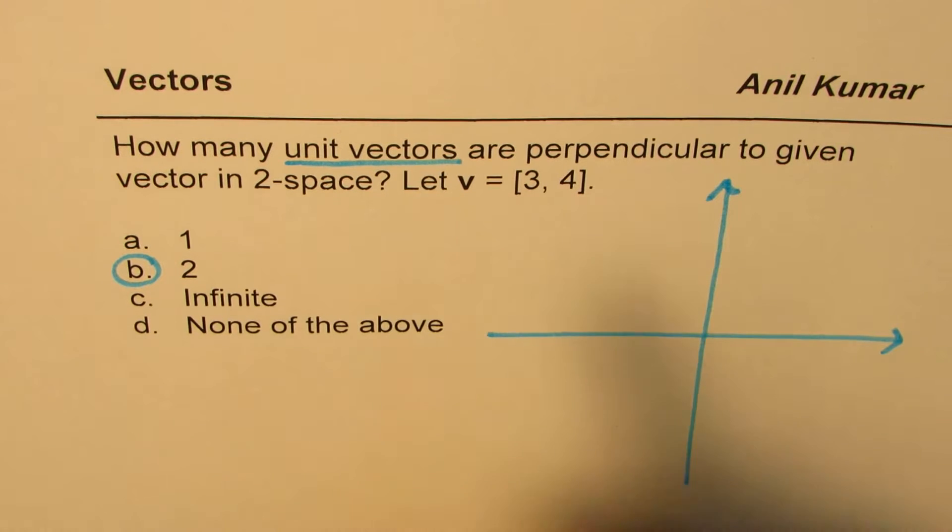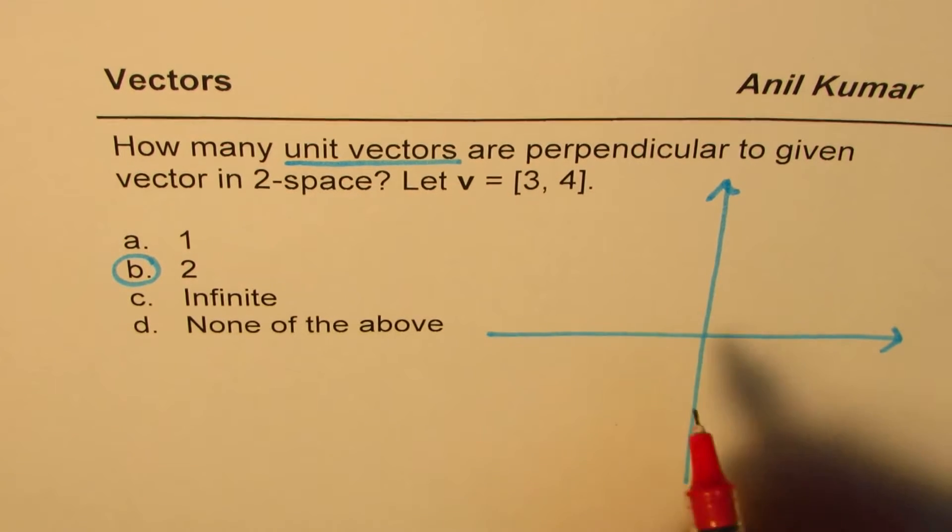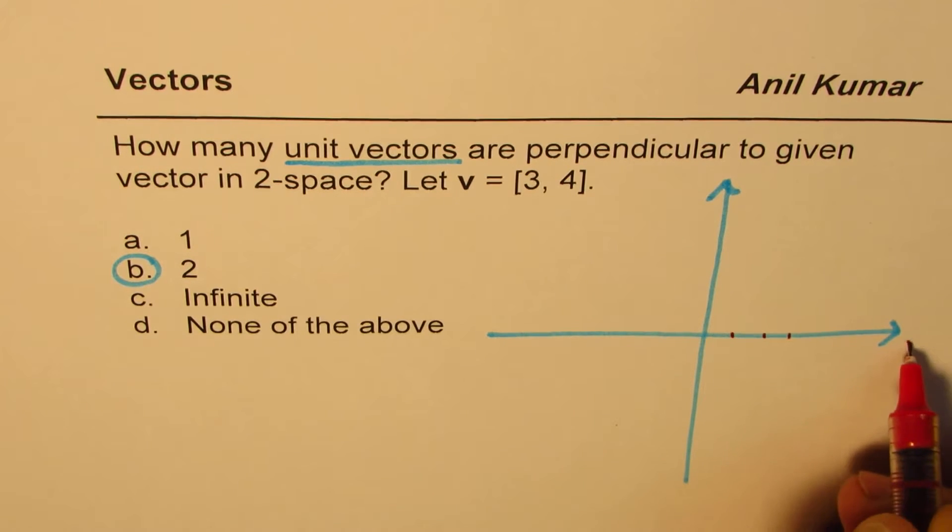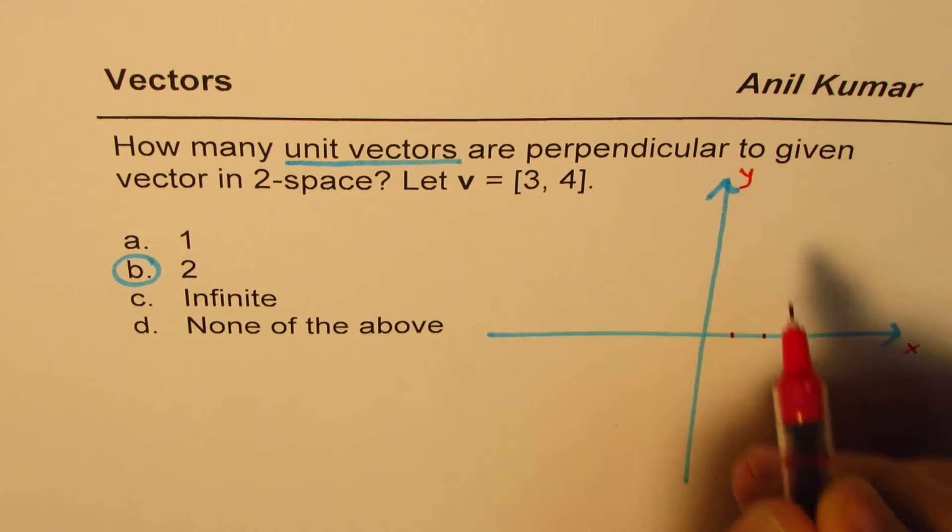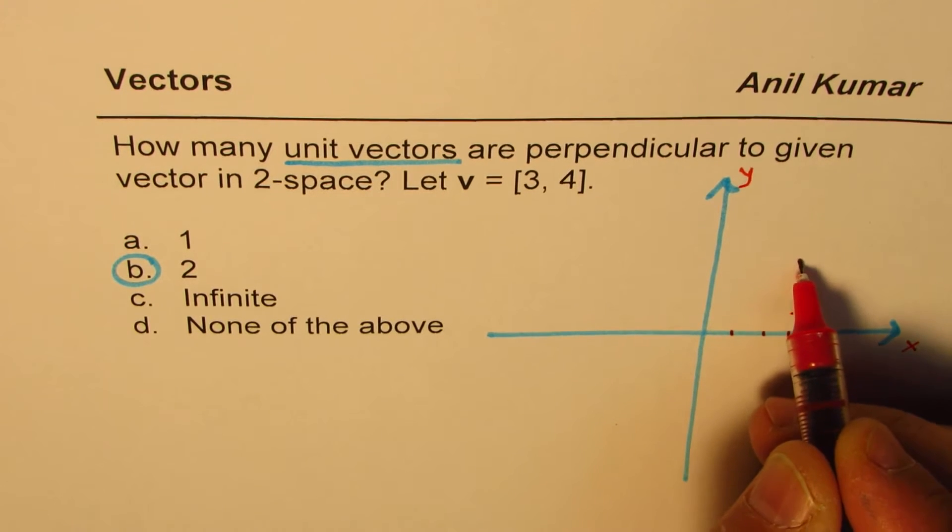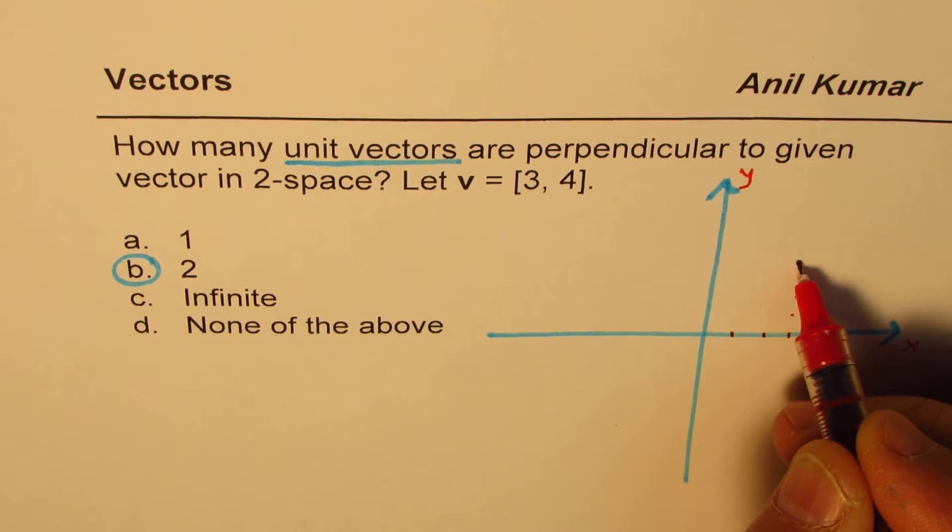Let's take the vector v [3, 4]. 3, 4 means 1, 2, 3 along the x-axis and along the y-axis, you move 4 units: 1, 2, 3, 4. So that's the vector [3, 4].